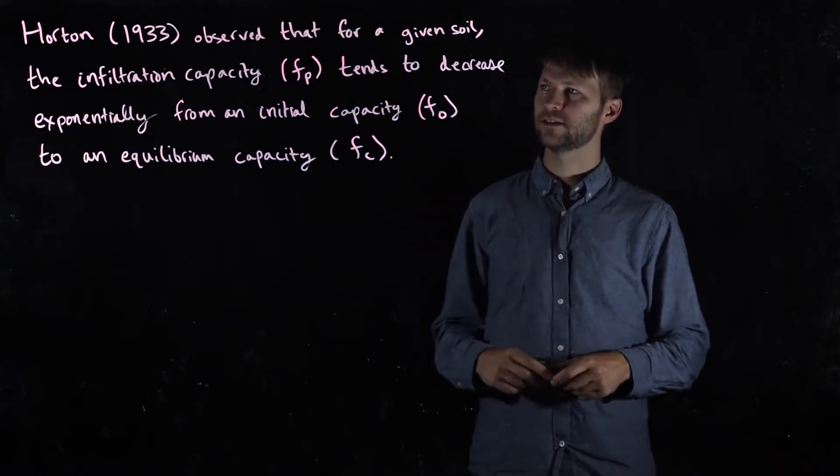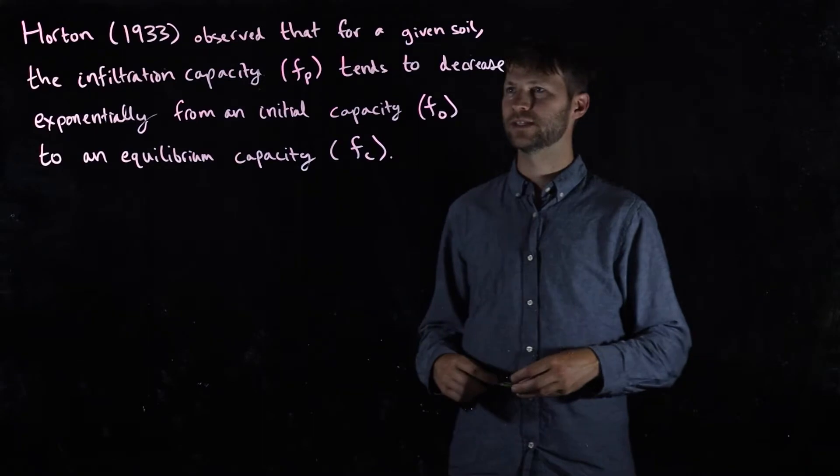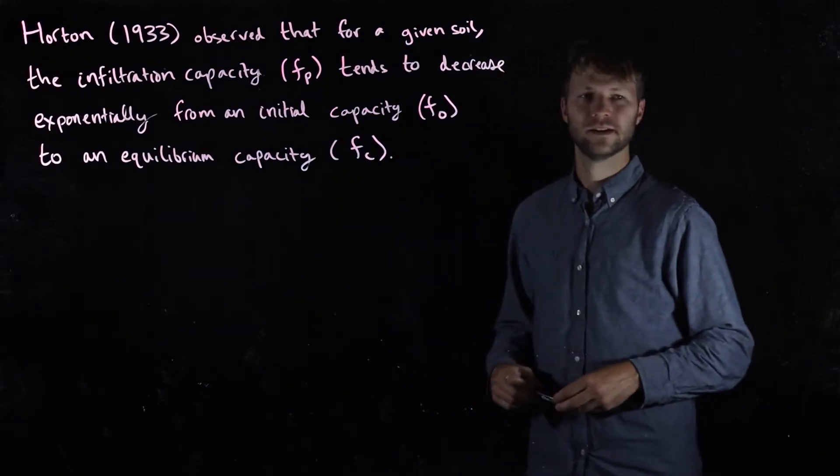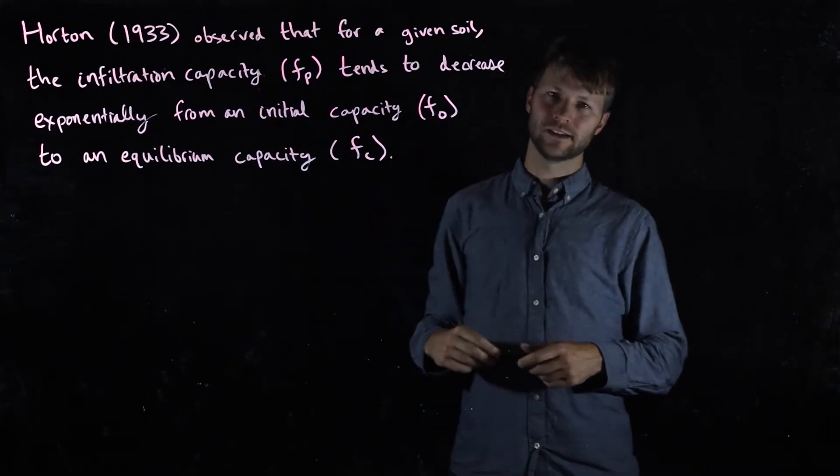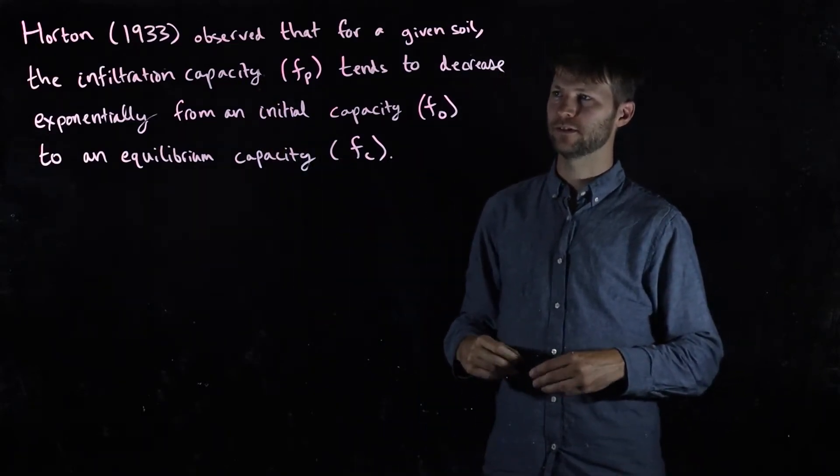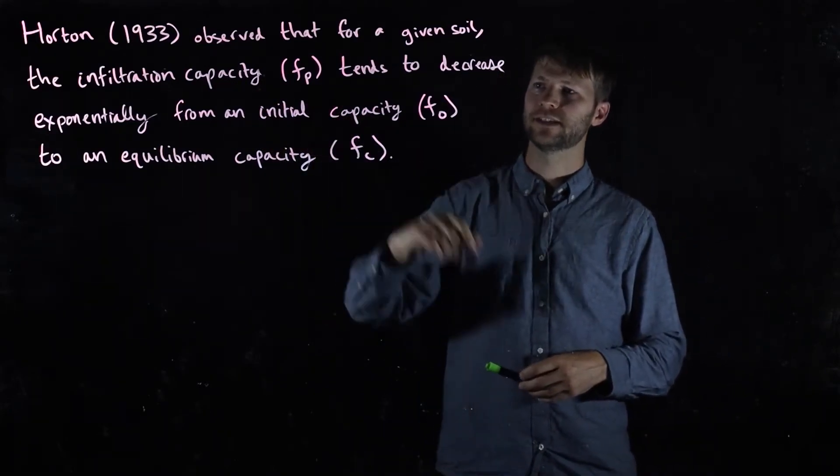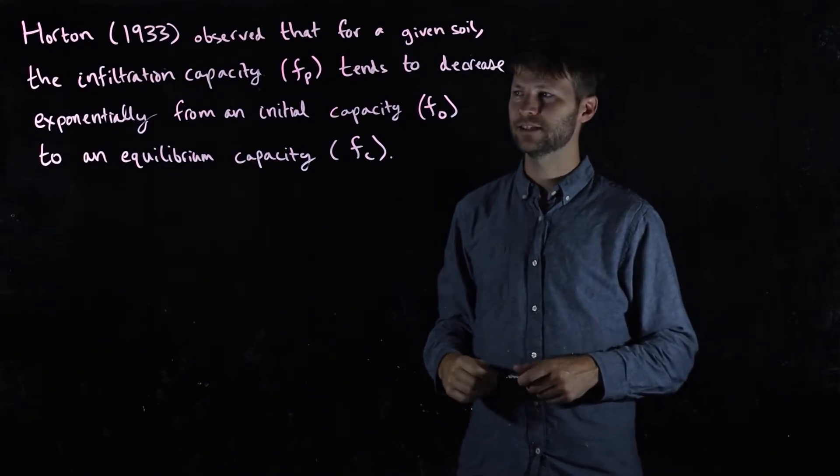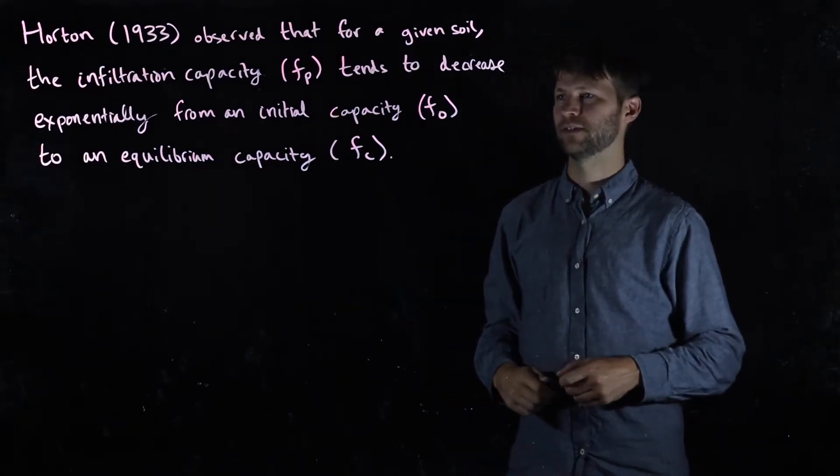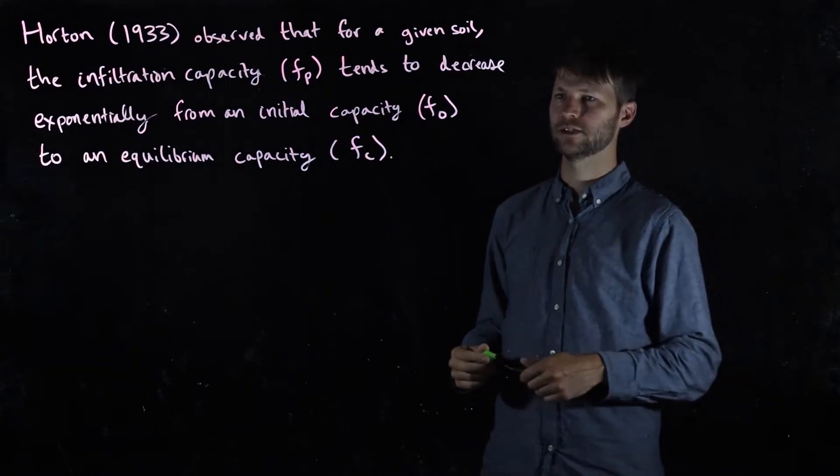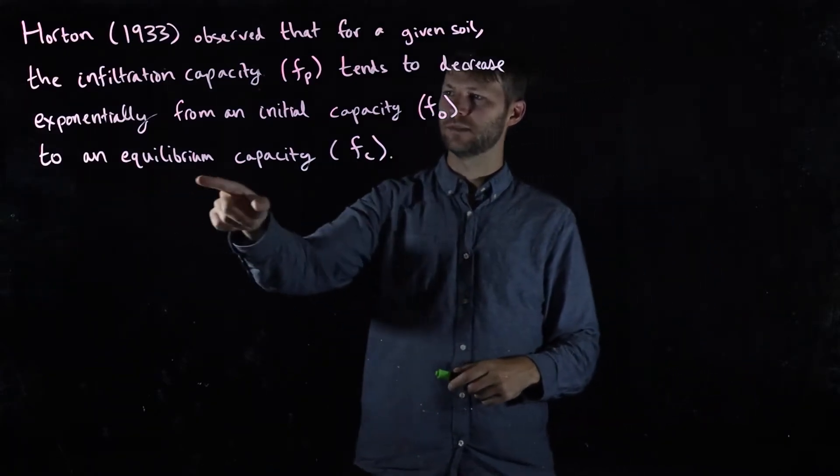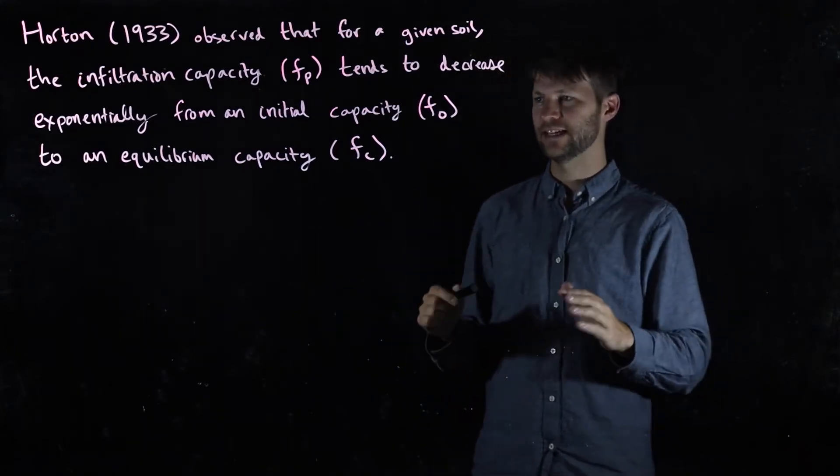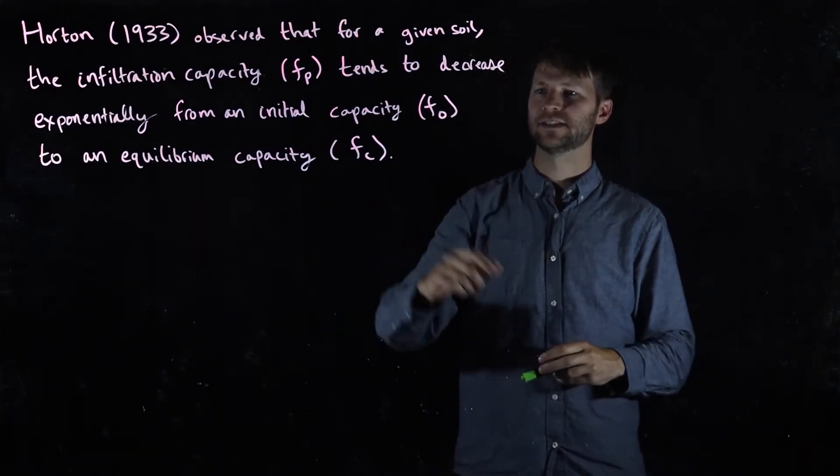In 1933, Robert Horton was doing some experiments and observed that for any particular soil, the maximum rate at which water can soak into the ground, the infiltration capacity denoted f_p, tends to decrease exponentially from some initial capacity f_0 to some long-term steady equilibrium capacity f_c.